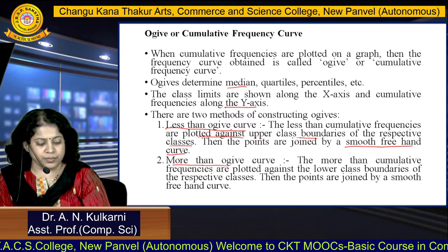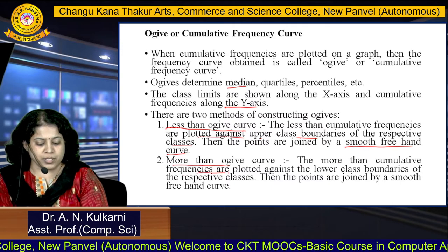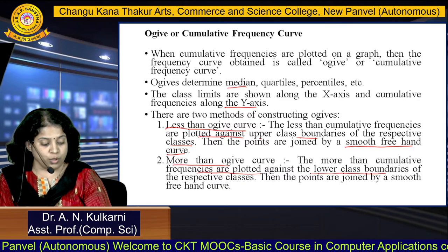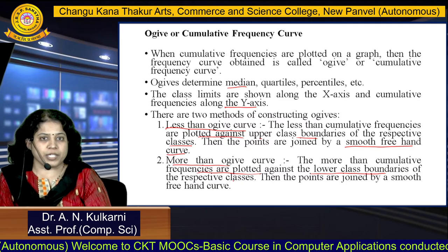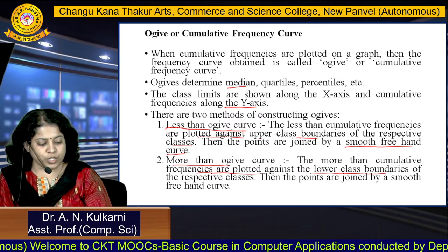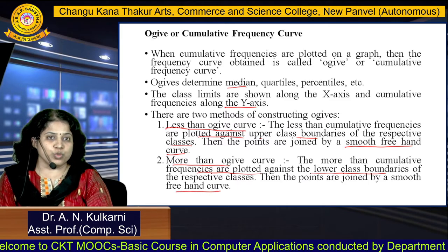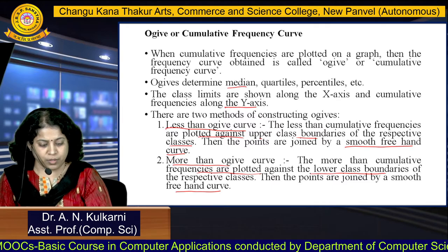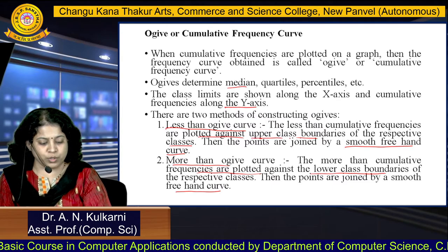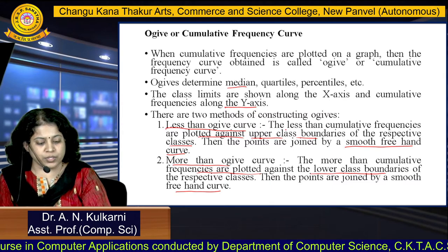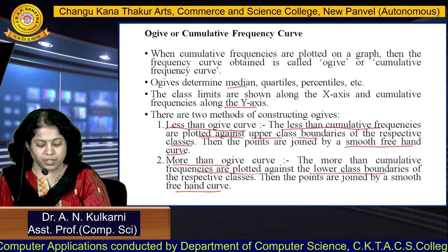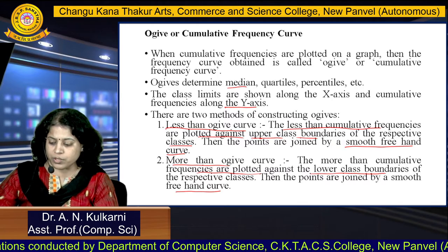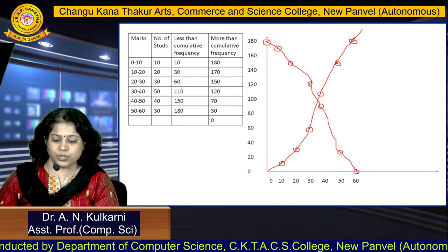For the more-than ogive curve, more-than cumulative frequencies are plotted against the lower class boundaries of the respective classes, and the points are joined by a smooth freehand curve. For the less-than ogive we consider upper class boundaries with less-than cumulative frequencies, and for the more-than ogive we consider lower class boundaries with more-than cumulative frequencies. See this example.